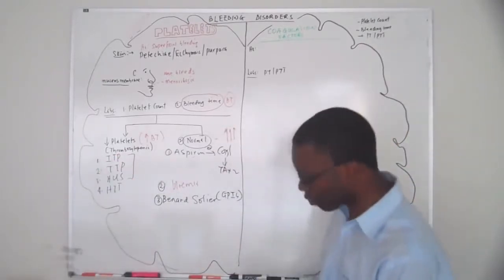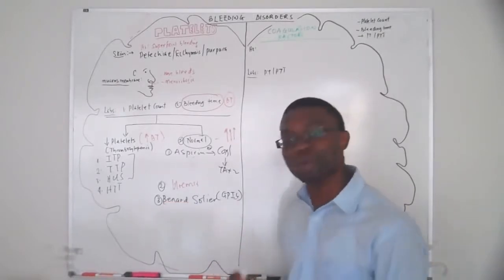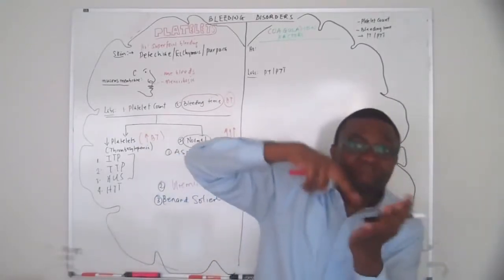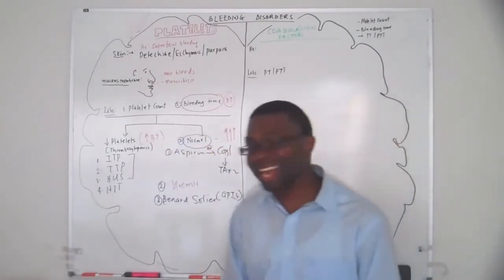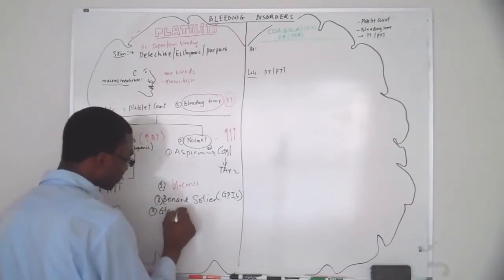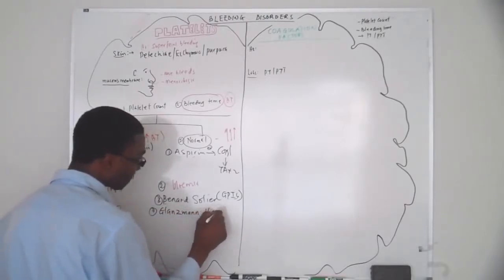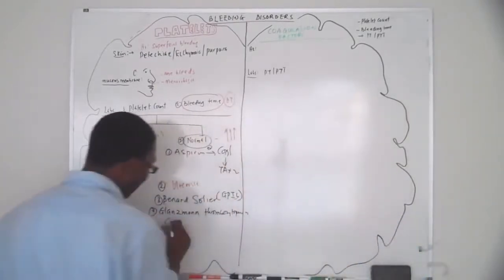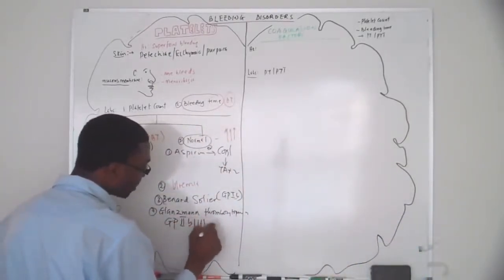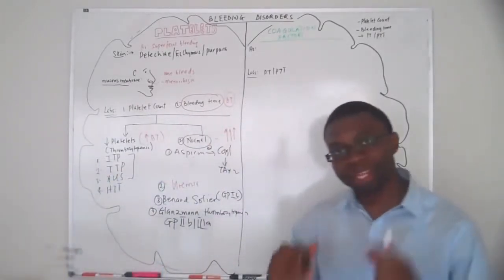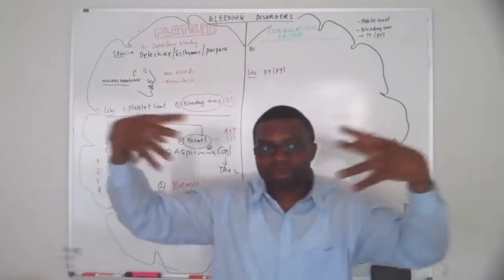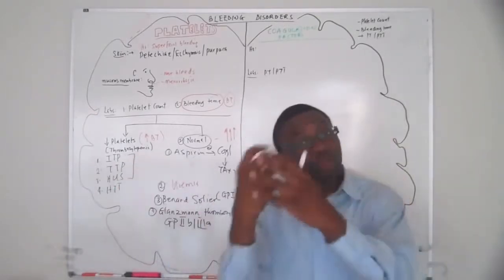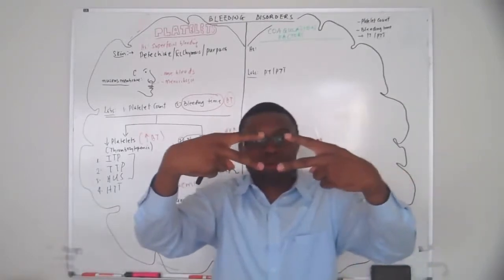How do I remember Bernard-Soulier? It starts with a B, so think glycoprotein 1B. The platelets are normal — the only problem is they can't bind. Number two is Glanzmann thrombasthenia — a deficiency in glycoprotein 2B3A. That's the glycoprotein needed for platelet aggregation. If it's deficient, the platelets can't come together and you keep bleeding. Normal platelet count, but bleeding time is high.